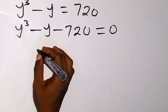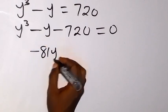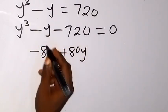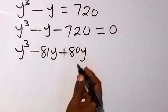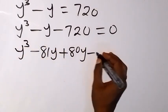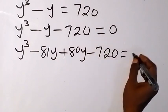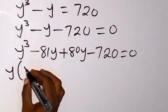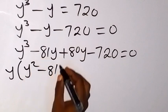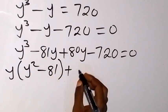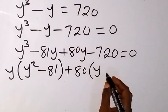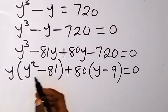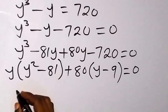We can write minus y as minus 81y plus 80y, since minus 81y plus 80y still gives us minus y. Slotting those two numbers in, we have y cubed minus 81y plus 80y minus 720 equals 0. Factoring in groups, y is common from the first two terms, leaving y squared minus 81, and 80 is common from the last two terms, leaving y minus 9.